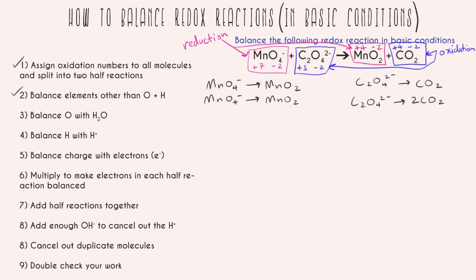Step three: balance oxygen with H₂O. Looking at the manganese half reaction, we have four oxygens on the left and two on the right, so we need to add two waters to the right-hand side. For the carbon-containing half reaction, we have four oxygens on the left and already four on the right — that worked out nicely, so we just copy it down.